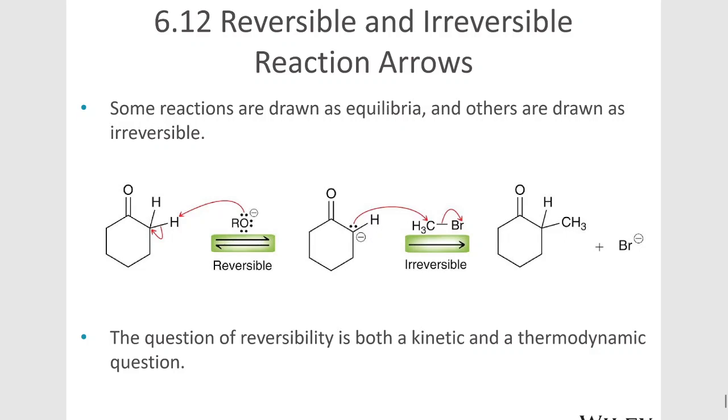The last topic in this chapter is reversible and irreversible reaction arrows. Sometimes our reaction is reversible, meaning that at equilibrium we're going to have a mixture of concentrations of products and reactants.